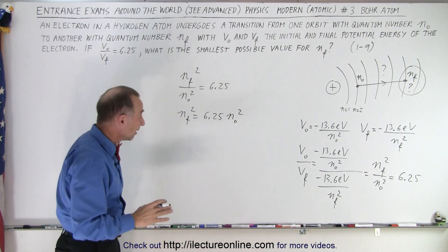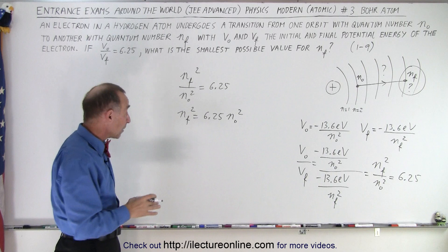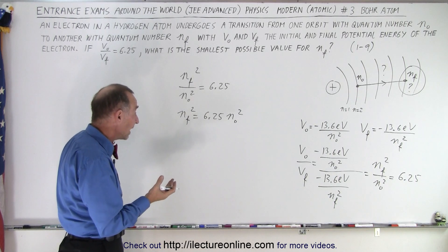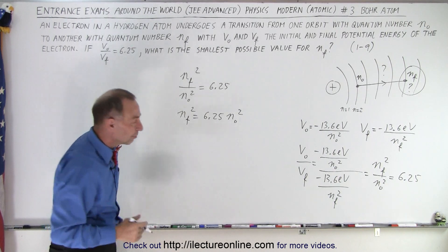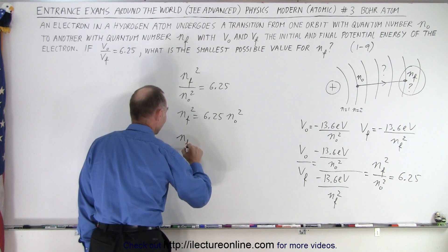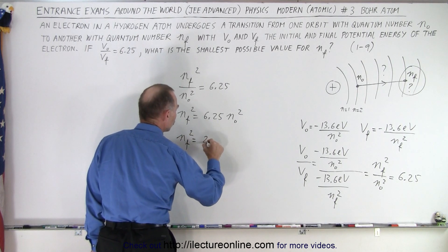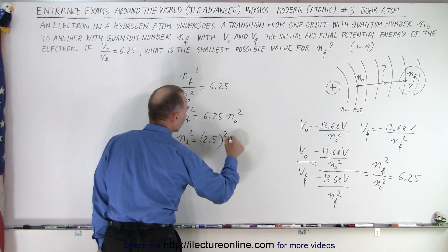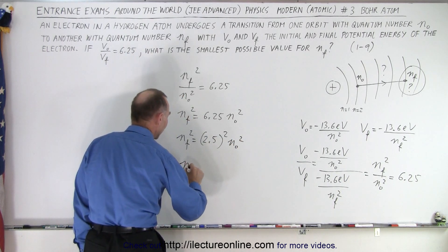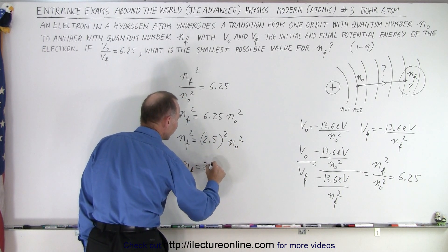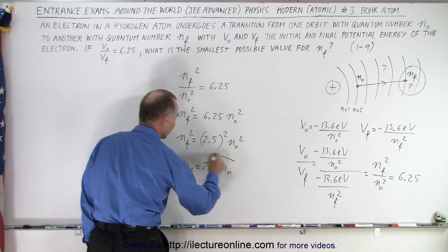Now, 6.25 looks a lot like 625. If we take the square root of that, it would be 2.5. So we can say that n_final squared is equal to 2.5 squared times n_initial squared, or n_final equals 2.5 times n_initial.